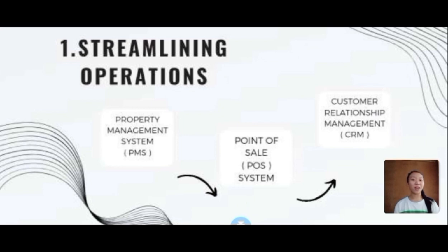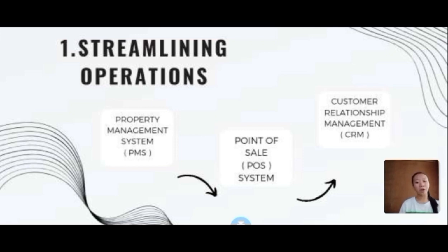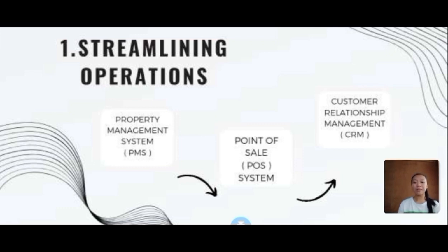My name is Tavgoni Marie Alrosario, and my topic is all about streamlining operations. Streamlining operations has three systems. The first is the property management system, or PMS. Streamlining the operations of a PMS in hospitality management involves optimizing processes to enhance efficiency, improve guest experiences, and boost profitability. A well-streamlined PMS can significantly impact the day-to-day operations of hotels, resorts, and other hospitality businesses by automating tasks, reducing manual errors, and providing real-time insights into business performance.